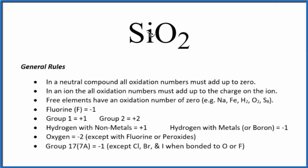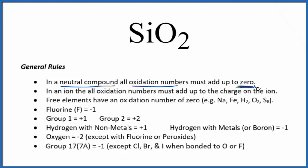To find the oxidation numbers for Si in SiO₂, we'll use these rules here. There's no negative or positive sign after the SiO₂ because it's a neutral compound, so all the oxidation numbers are going to add up to zero.